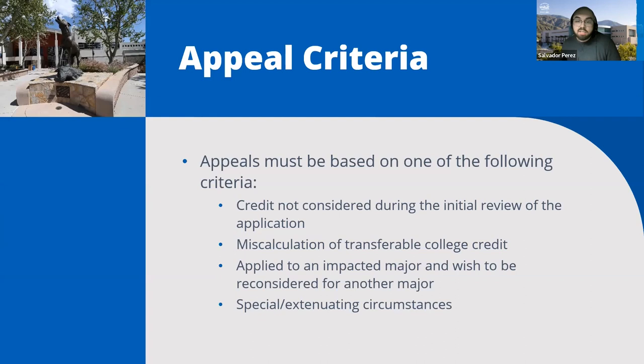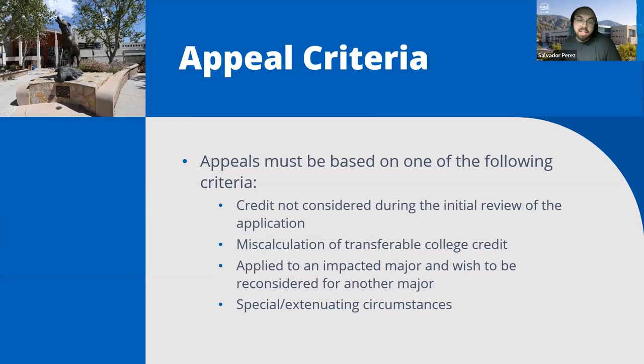Anybody can appeal, but it's really for those students who have received a denied decision. You won't be able to appeal until you actually receive the denied decision, so keep that in mind. Students who have a higher chance of acceptance through appeal are those who just did not meet the admissions criteria — for example, high school students who didn't complete the A-G courses or whose GPA is too low.